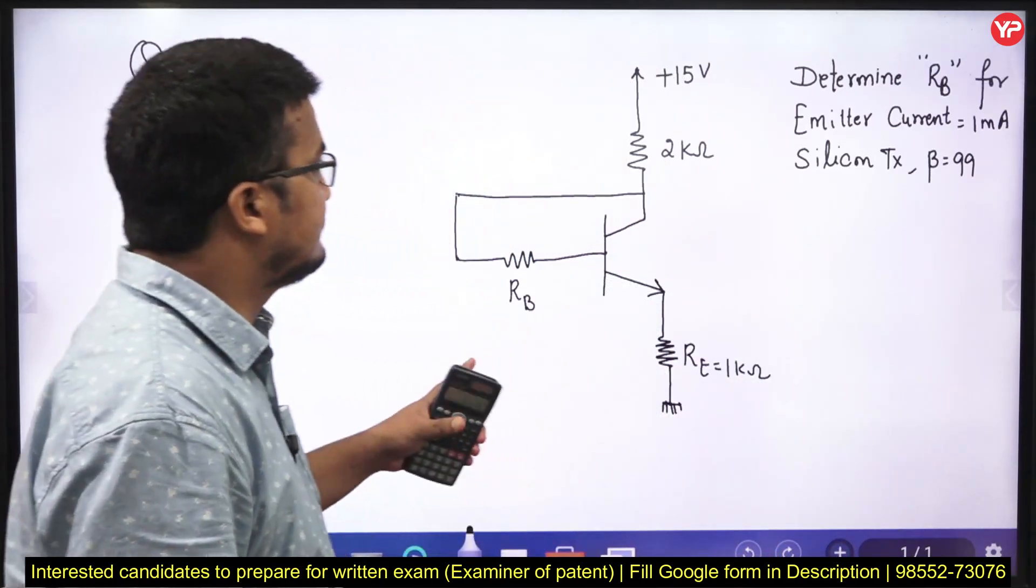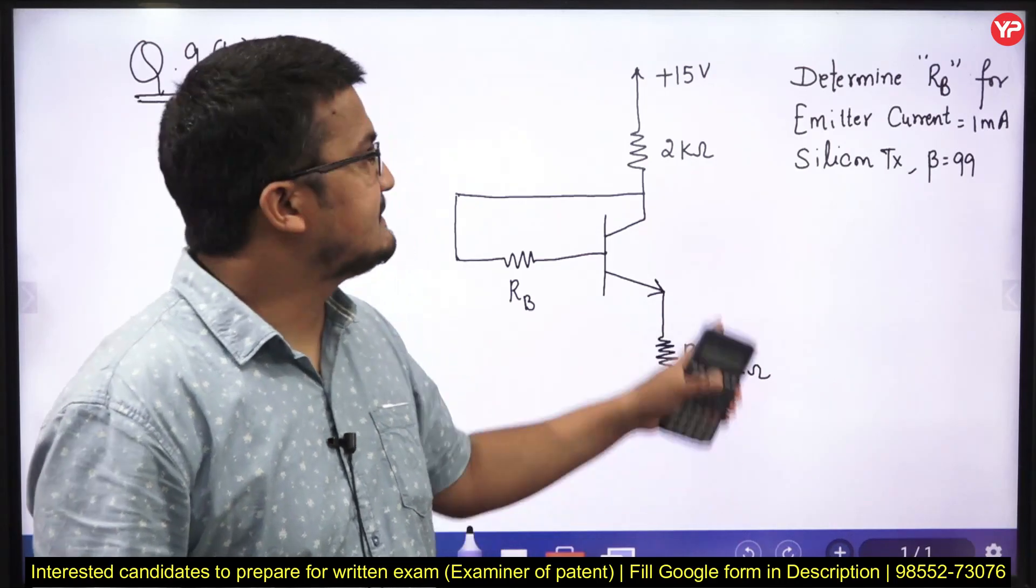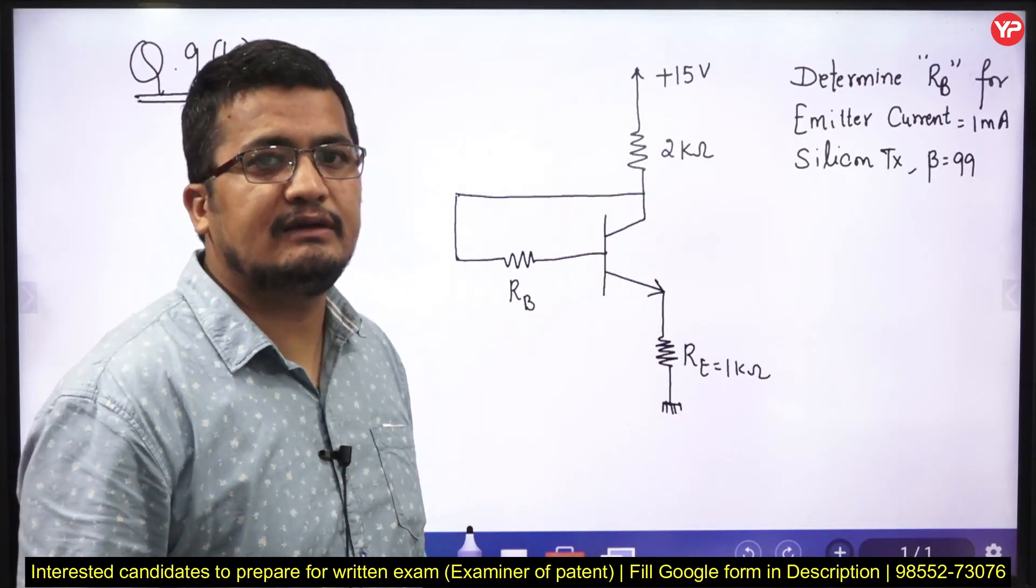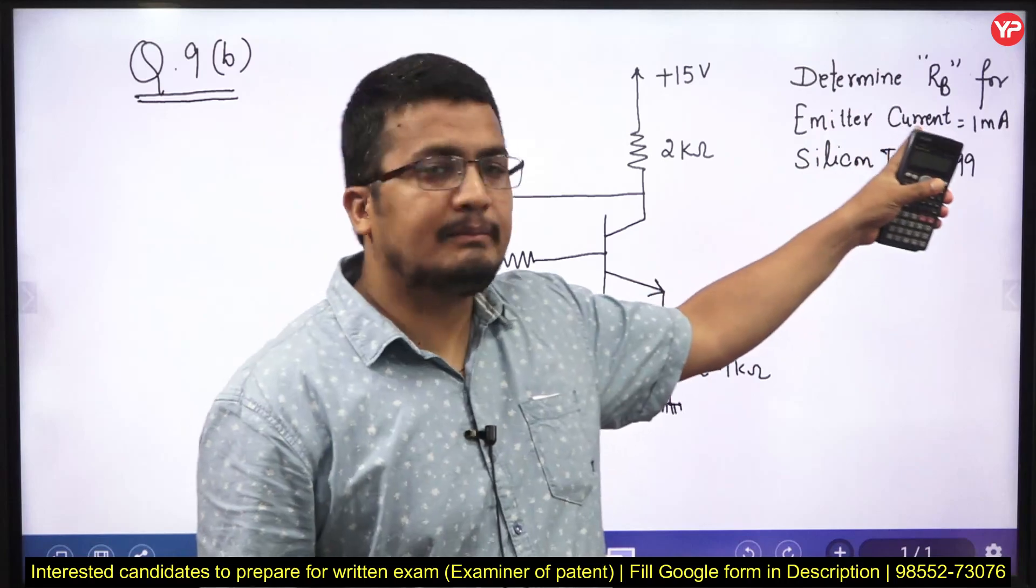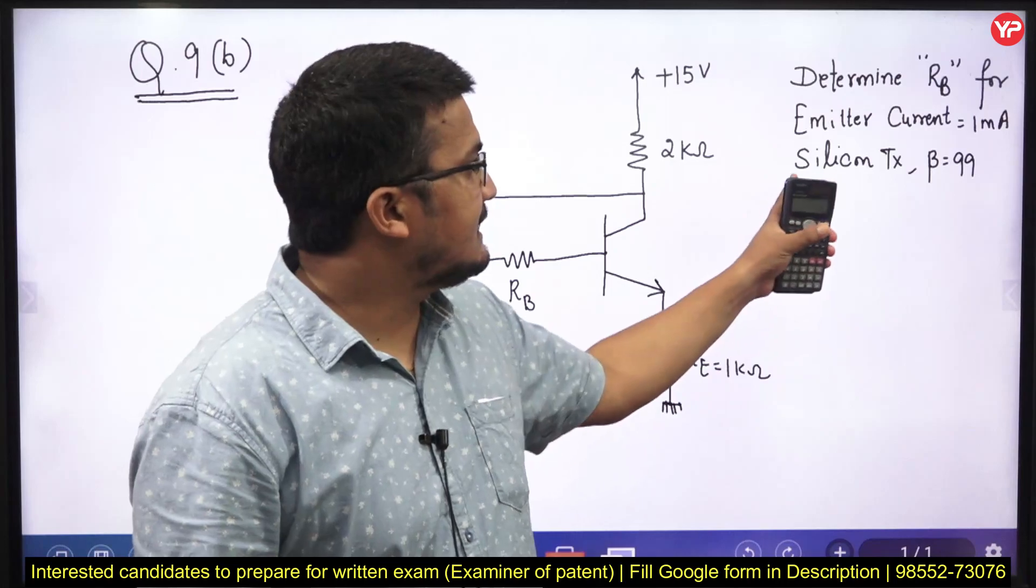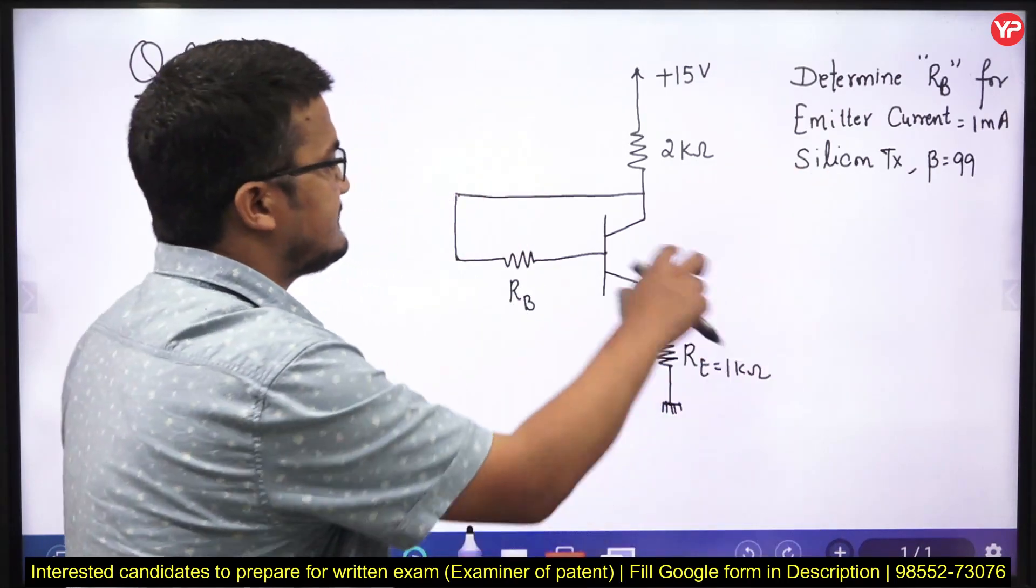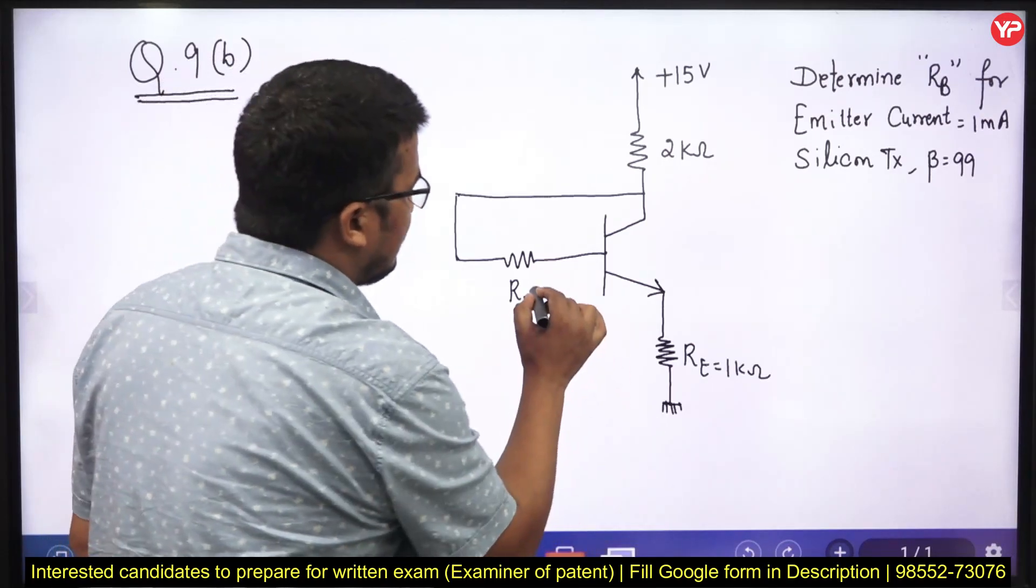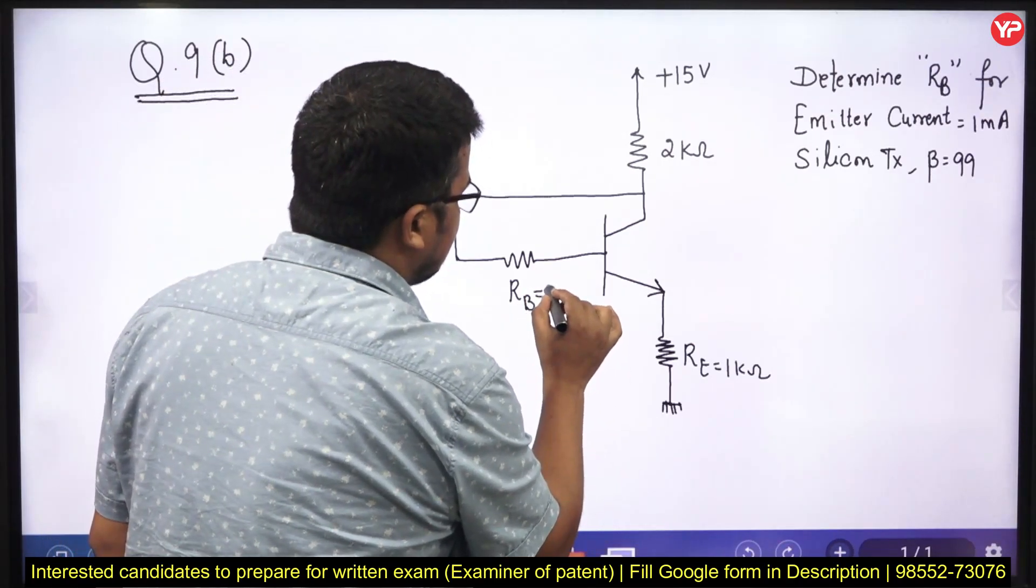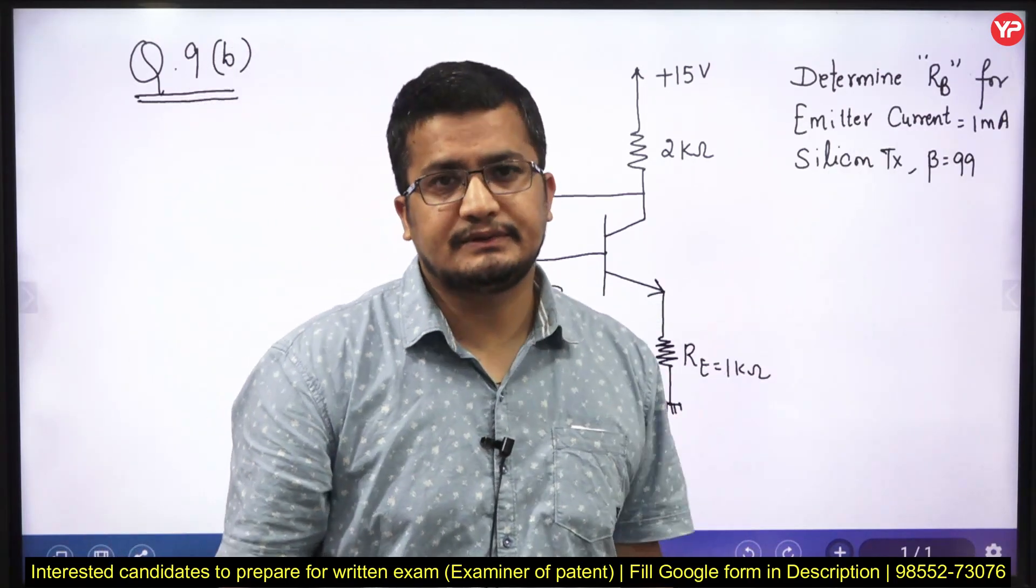Basically if we see this problem, this is a BJT biased with some supply voltage and the question given is determine RB for emitter current 1 milliampere, silicon transistor and beta is 99. This was the question asked and you need to calculate this RB value so that this circuit is biased at emitter current of 1 milliampere.